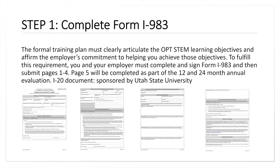When completing Form I-983, this five-page document wants to know how your job with your employer is related to your STEM field. If you're not in a STEM field, you're not able to apply for a STEM extension and are limited to the 12-month standard OPT. You're still sponsored by Utah State University, and we are required by law to make sure that what you've provided to us makes sense and meets the terms that make the STEM extension so valuable.